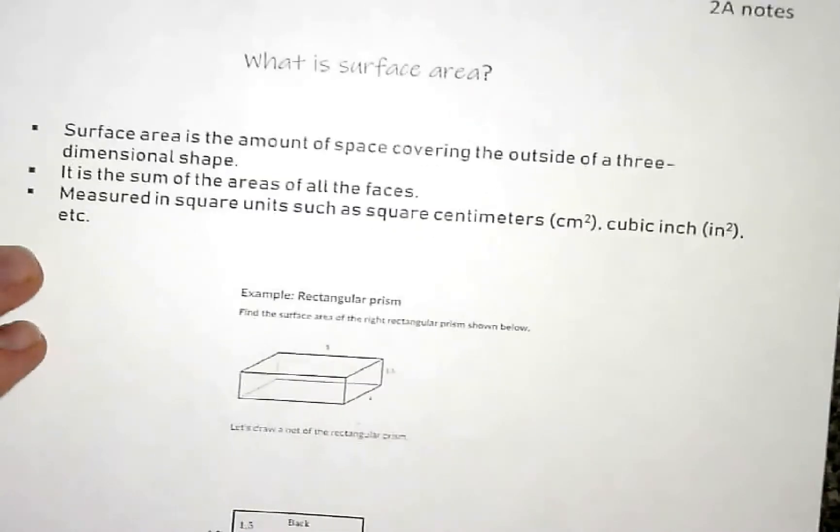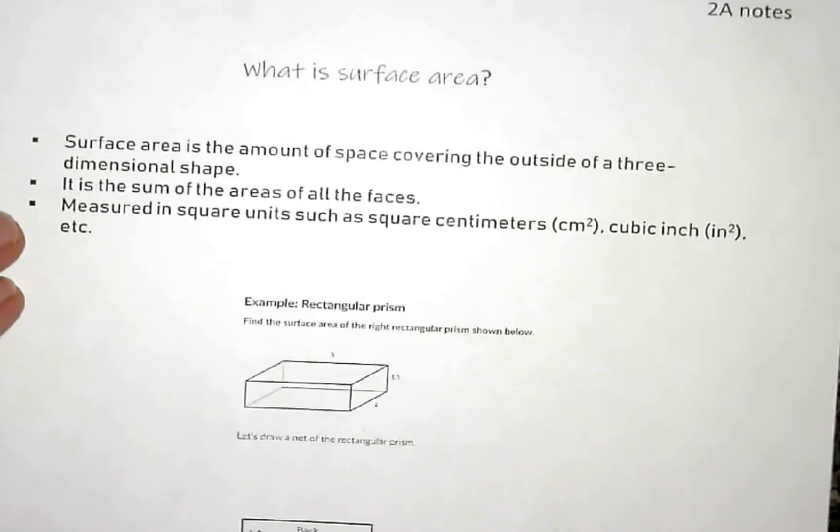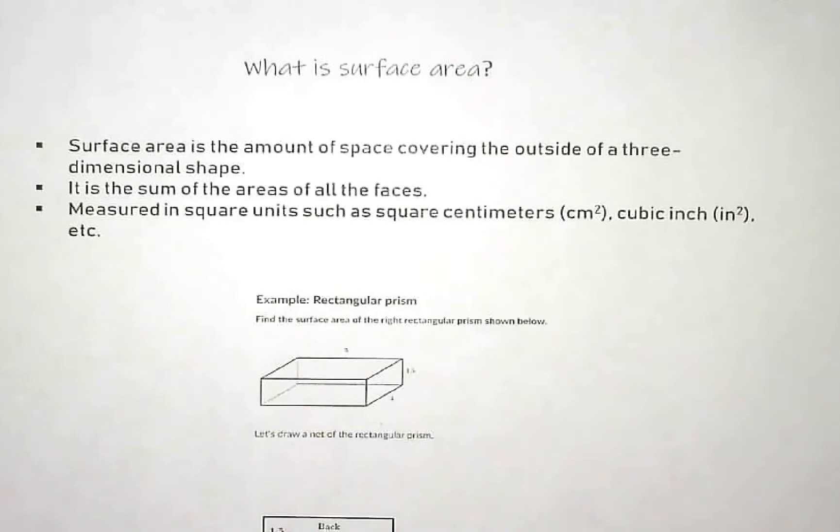Second part of our notes is basically what this whole level is about. This is called surface area. We just got done in level one doing just plain area. Surface area is the amount of space covering the outside of a three-dimensional shape. It is the sum of all the areas of all the faces. Remember, the faces are the sides.